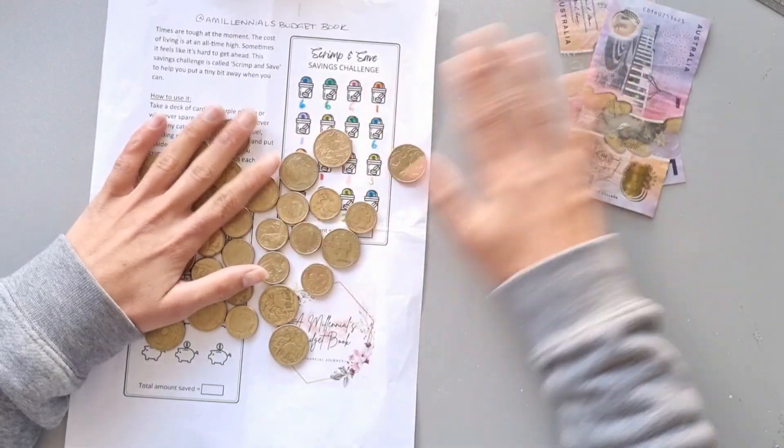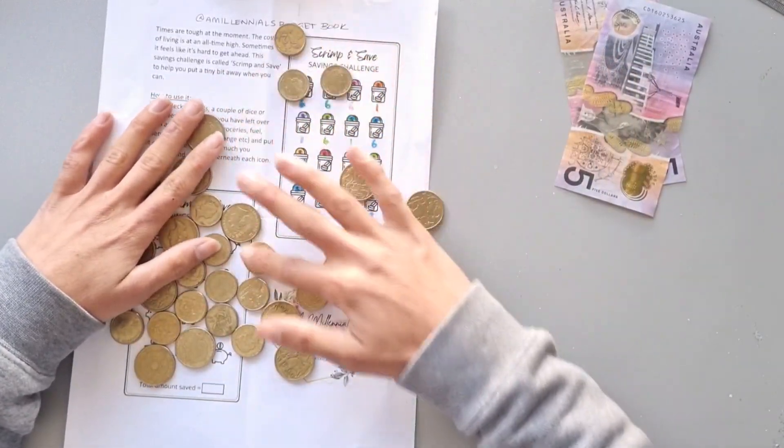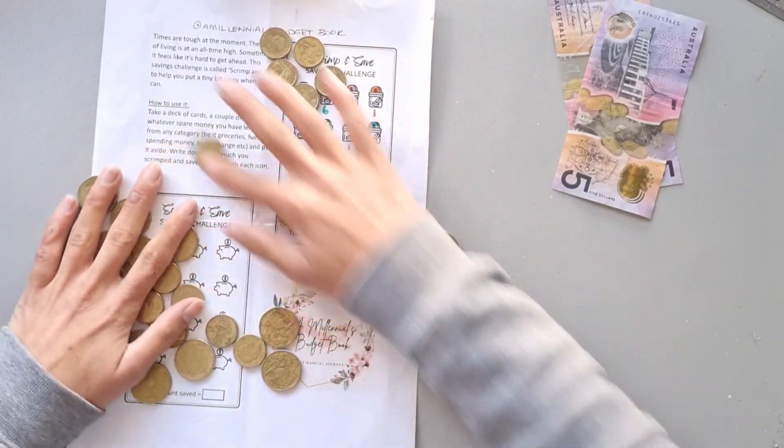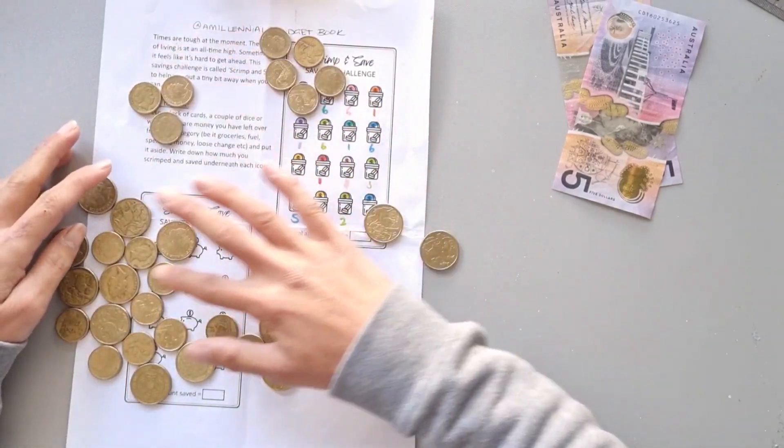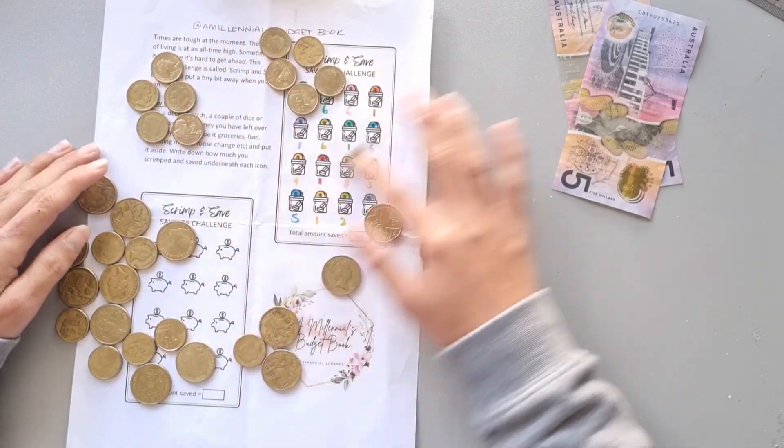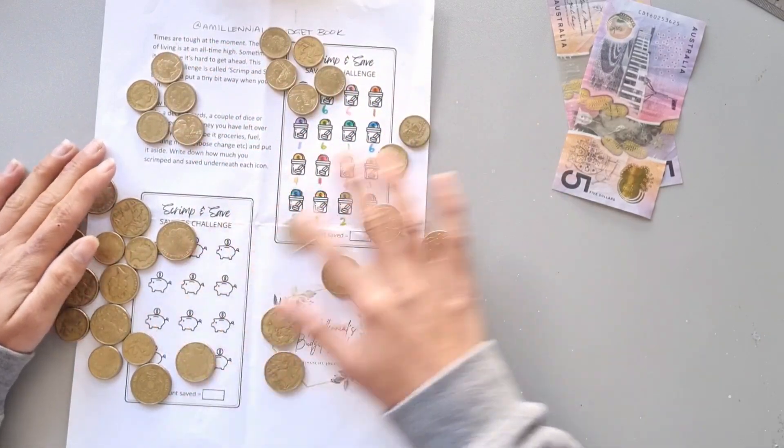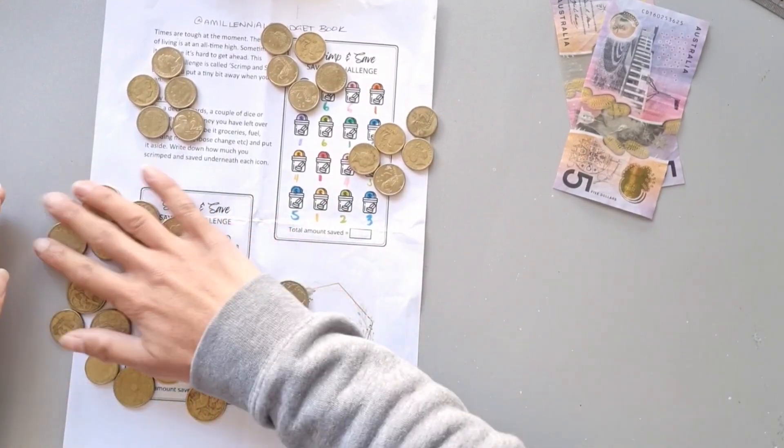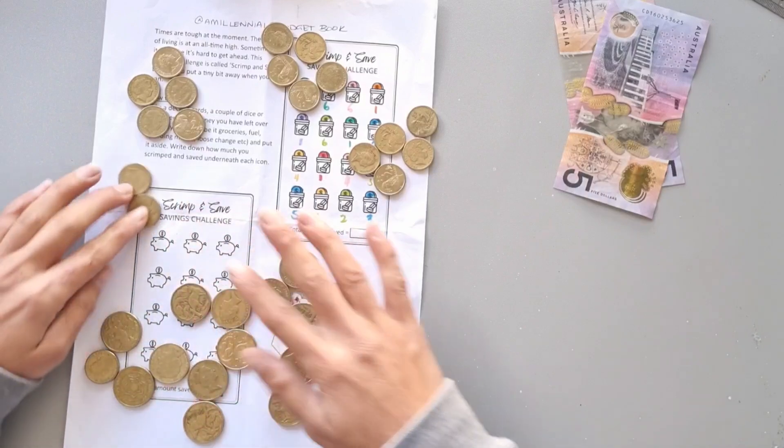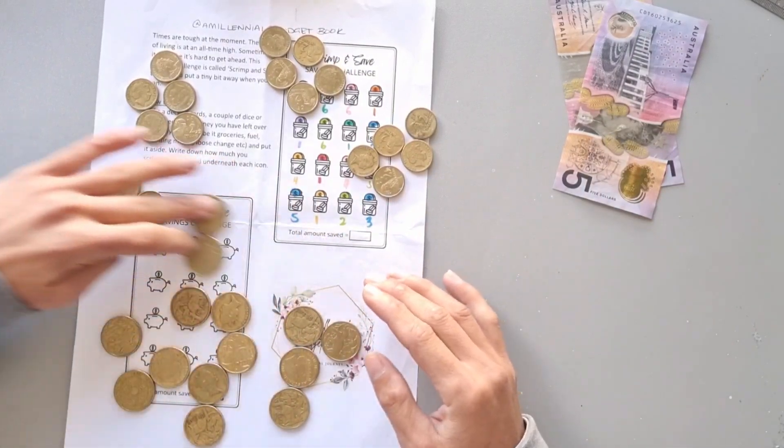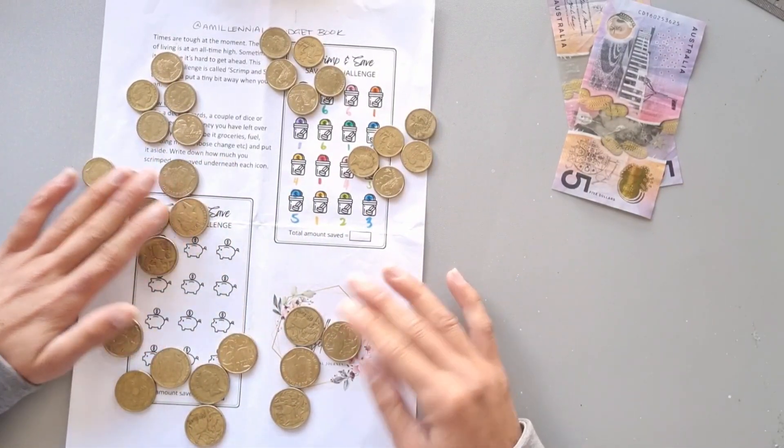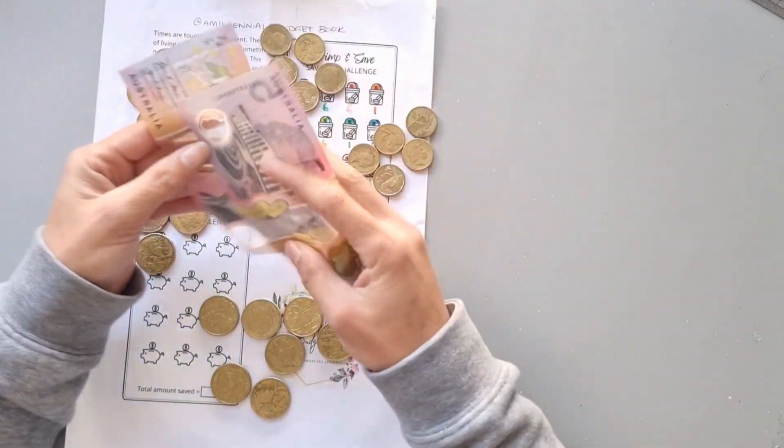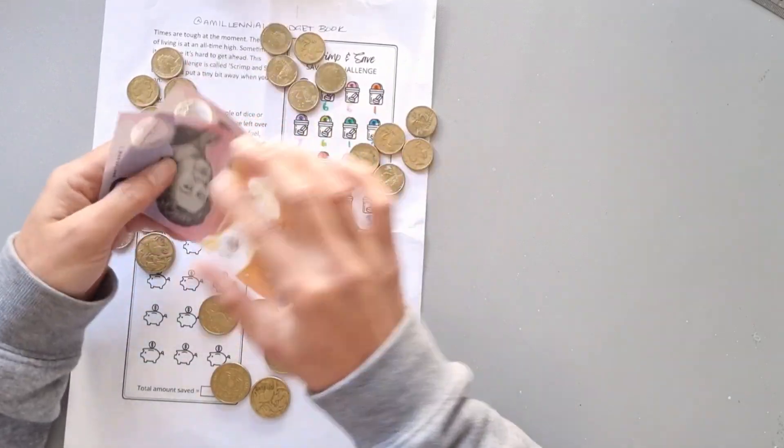So let's put the notes to the side for a second. We've got 2, 4, 6, 8, 10. So jumping straight into it: 2, 4, 6, 8, 20. 2, 4, 6, 8, 30. Okay, 2, 4, 6, 8, 40. 2, 4, 6, 8, 50.